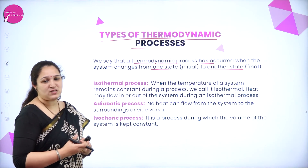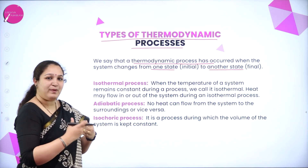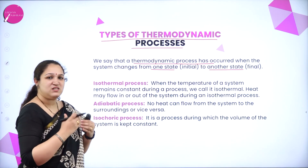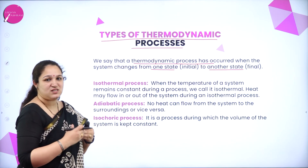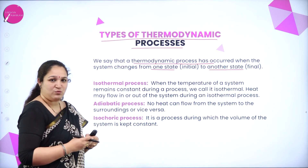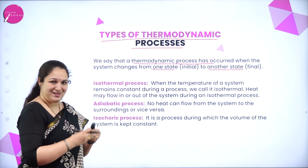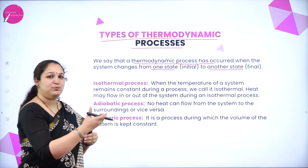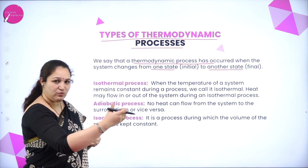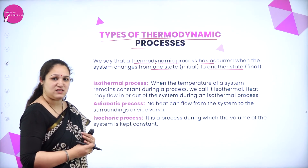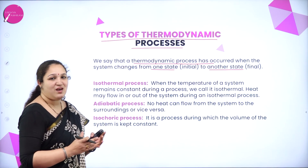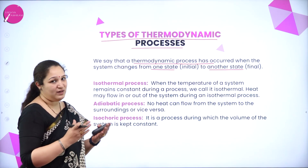There are different processes — some path or process which is happening is changing the state of the system. What it was first, we call it as the initial state. After the process, where it has reached, we call that state as the final state. Now the processes can be of different types.